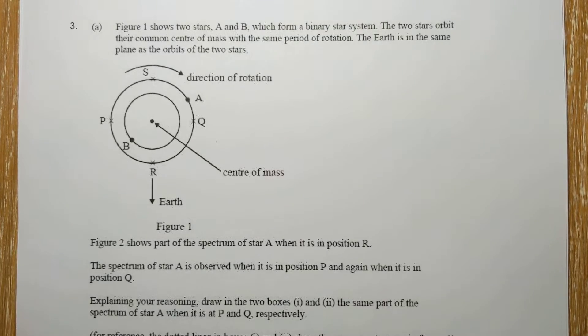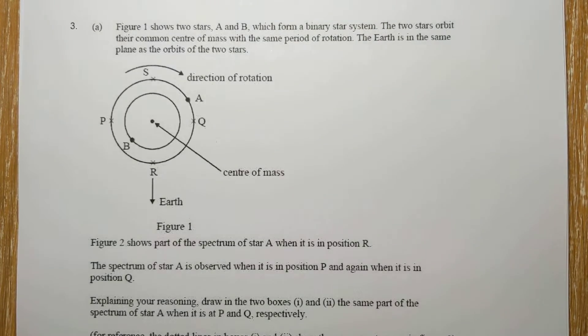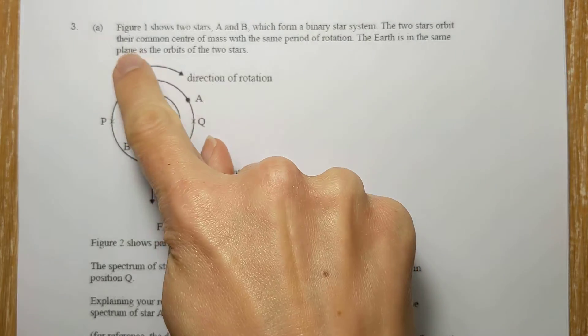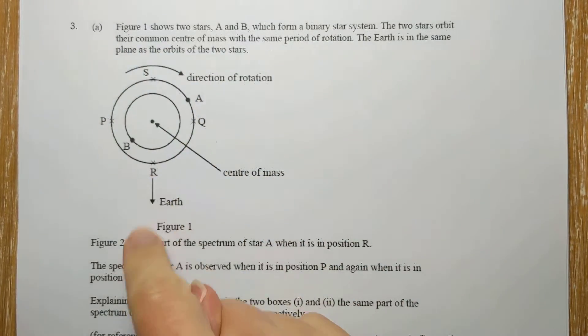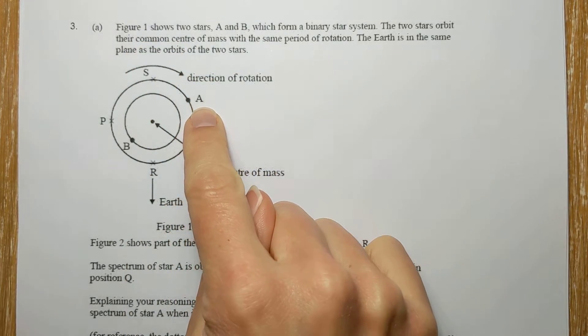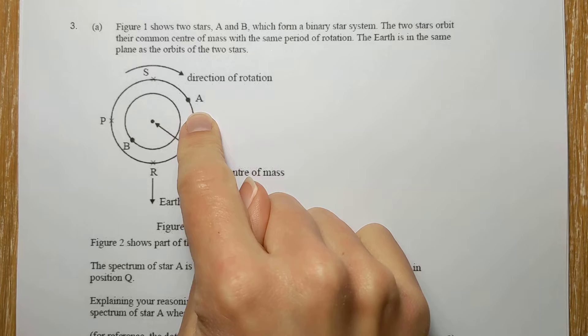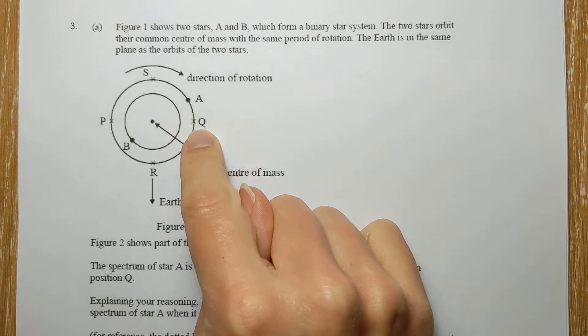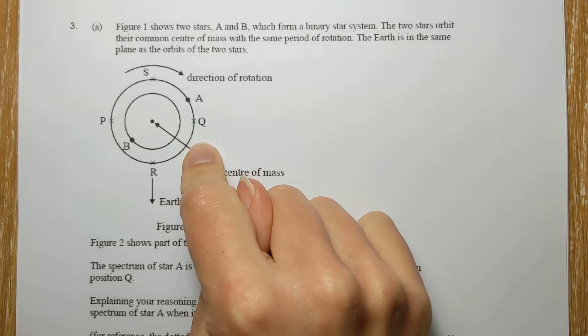To astro now, and here's a binary star system. The stars are rotating this way and Earth is over here. So when star A gets to Q, it's coming towards us and so the light from it will be blue shifted. It will have a shorter wavelength than if the star was stationary there.